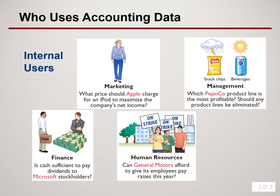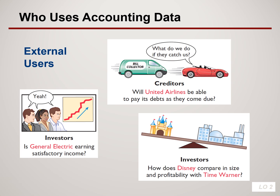There are two types of users of accounting data: internal and external users. For internal users, the marketing department may question what price should be set for a product, management may question whether any product should be eliminated, the finance department may consider whether there is sufficient cash to pay shareholders, and human resources may consider whether employees can be paid their bonuses for the year.